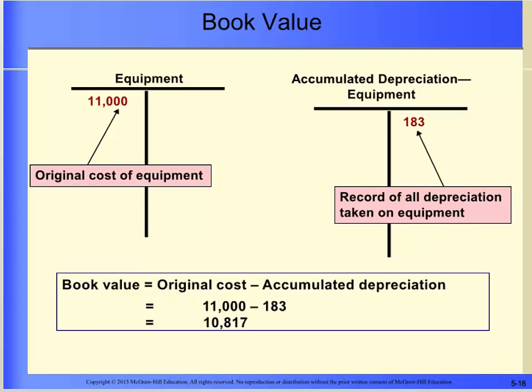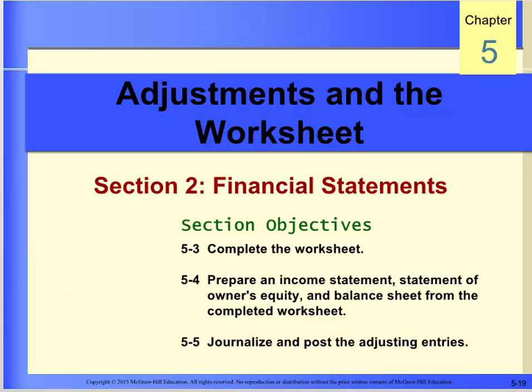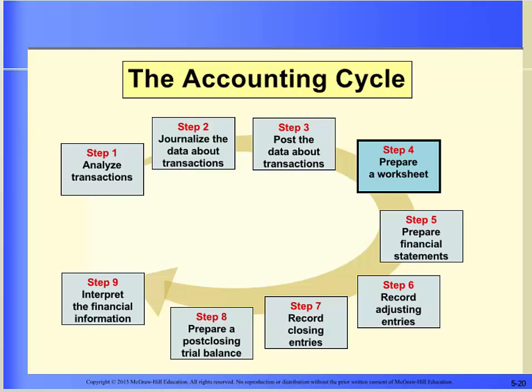When all of the adjustments have been completed, foot the columns to ensure that they balance. Book value shows what the asset's net cost is on the books of the business. By net cost, we mean its original cost less the depreciation taken to date — it is the unexpensed portion of the original cost. The book value of our equipment right after the first depreciation adjustment is $11,000 minus $183, which equals $10,817.